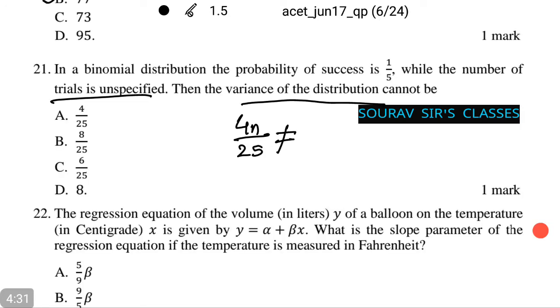Now, we check this equation with the given options. We see option number C, 6 by 25. For no values of n can 4n by 25 be 6 by 25. Thus, C is the correct option. A, B, and D are possible for different values of n.